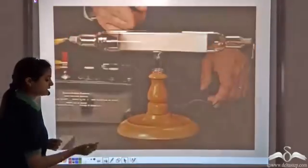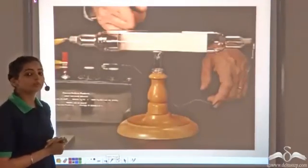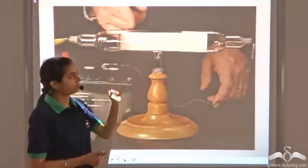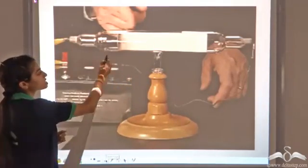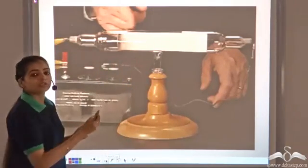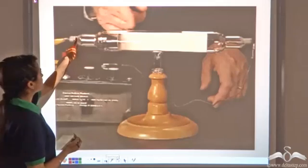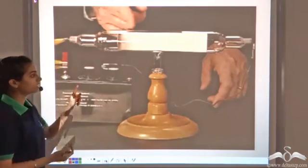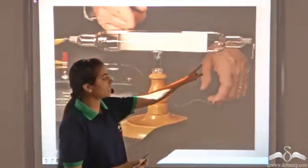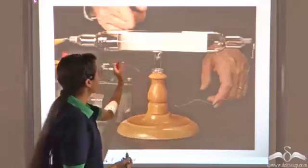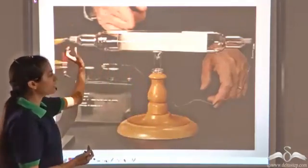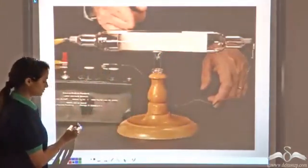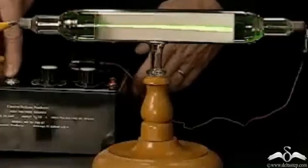Some years later, a scientist named William Crookes performed an experiment using this apparatus, known as a cathode ray tube. He connected this end to the negative terminal of the battery and this end to the positive terminal. He then switched on the battery.